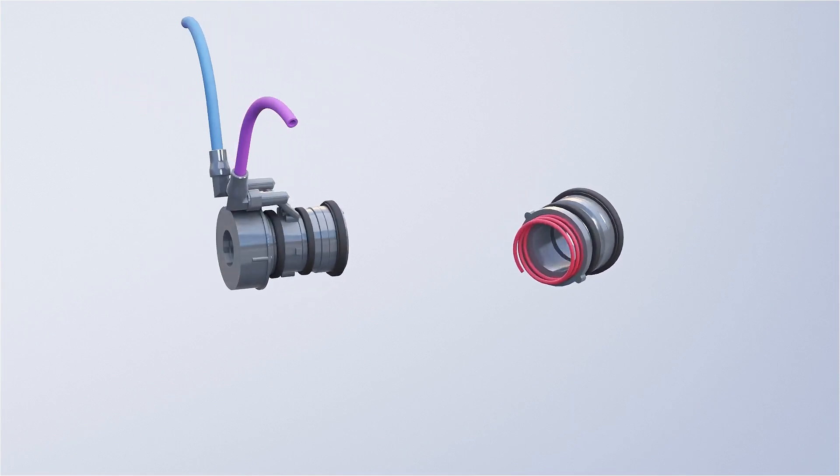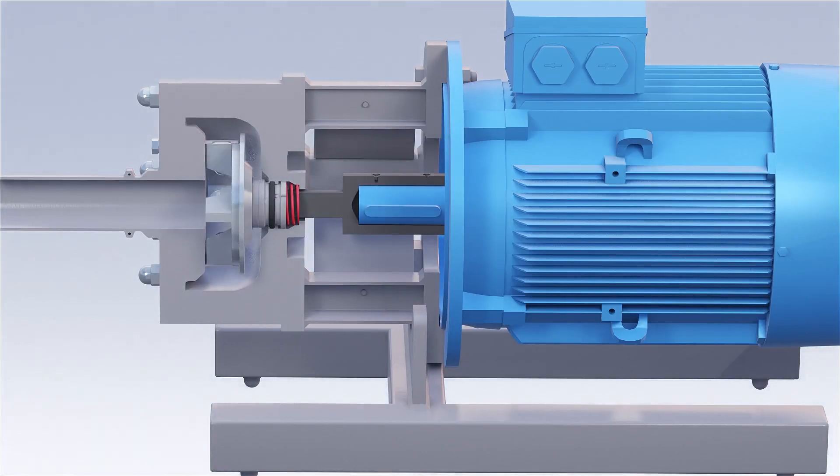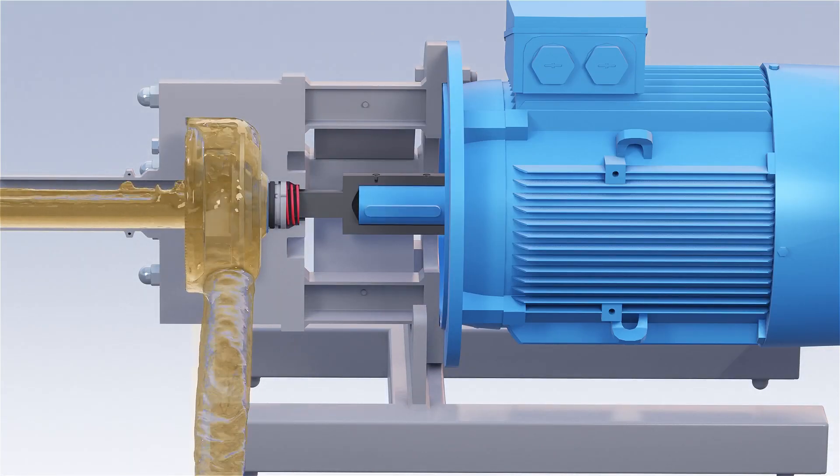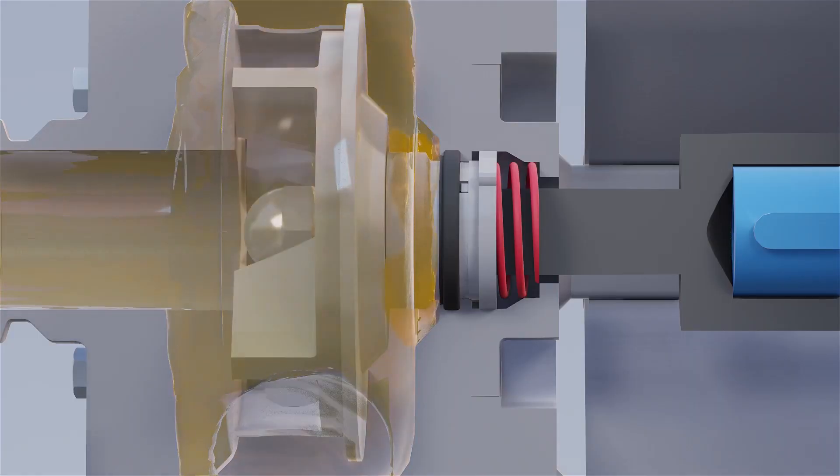Briefly, single mechanical shaft seals are product lubricated and if the product is sticky or abrasive, the seal faces can be damaged and leak.